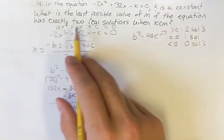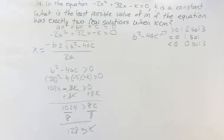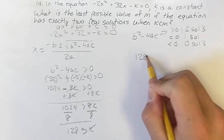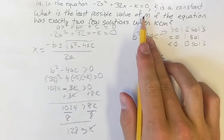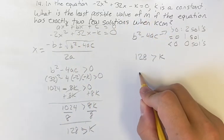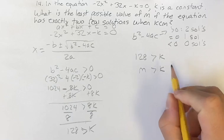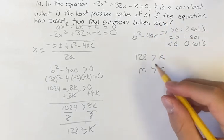So the equation has exactly two real solutions when k is less than m. If we know that 128 is greater than k, the least possible value of m, if m is greater than k as this flipped, is 128.